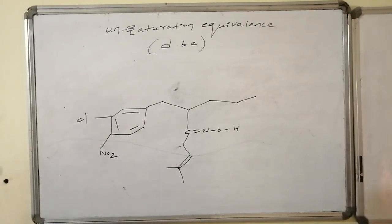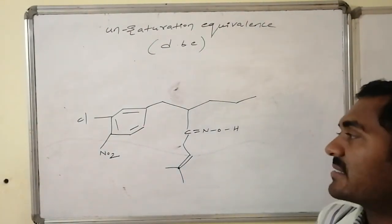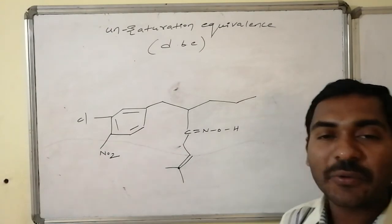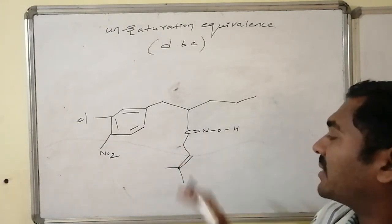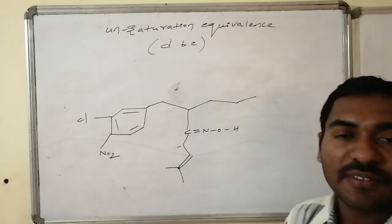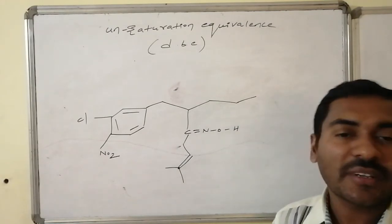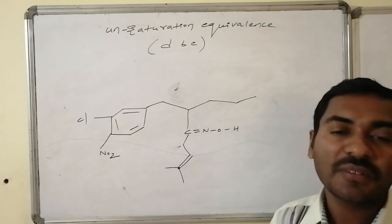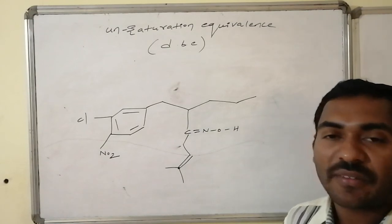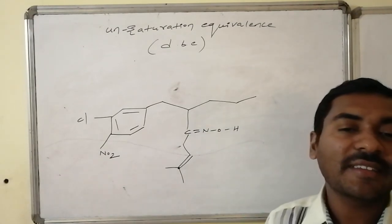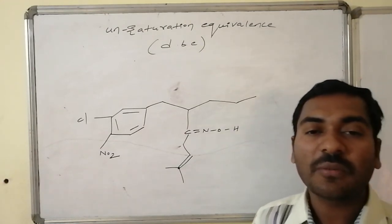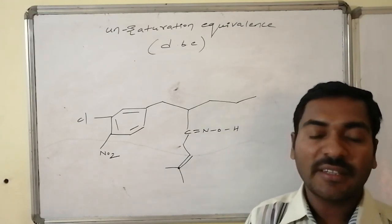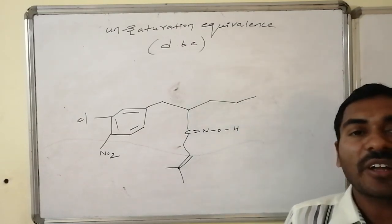Practice problem: calculate the double bond equivalence present in the given structure. The structure has a benzene ring (3 double bonds + 1 ring), a nitro group (1 double bond), an oxide (1 double bond), and one additional double bond. By looking at the structure you can count directly, but also apply the formula using the molecular formula: DBE = C + 1 + N − (H + halogens)/2, to find the total number of double bond equivalences.